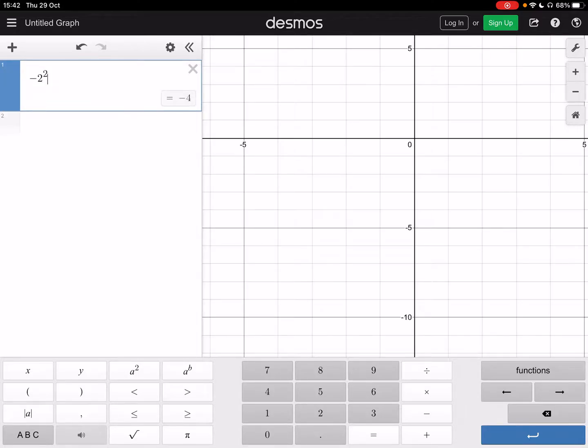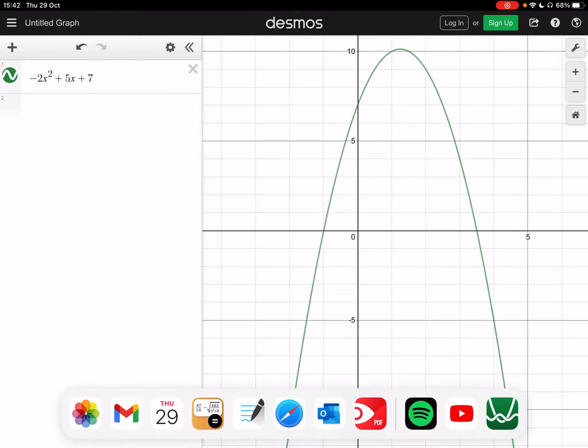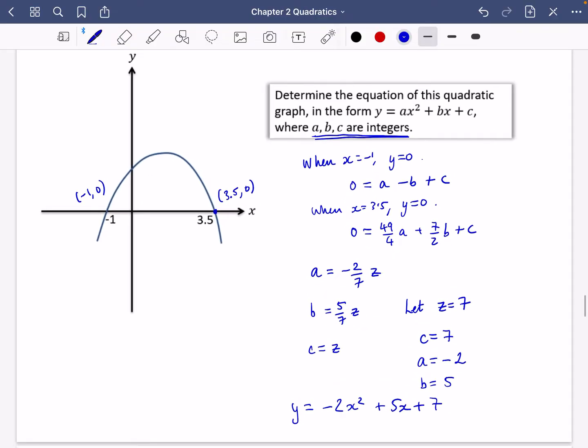And we have the roots at 3.5 and minus 1. I guess we could have done this in a different way. This is perhaps a slightly tricky way of doing this. We could have just said to ourselves, well, if the roots are minus 1 and 0, I know that the brackets should be x plus 1 and then x minus 3.5. And when I expand these brackets, I would get x squared minus 2.5x minus 3.5.